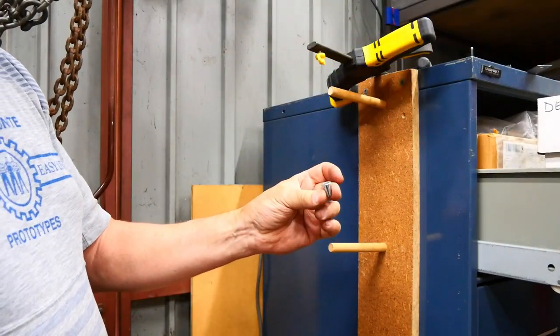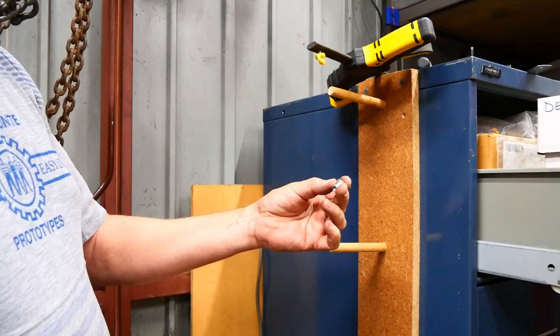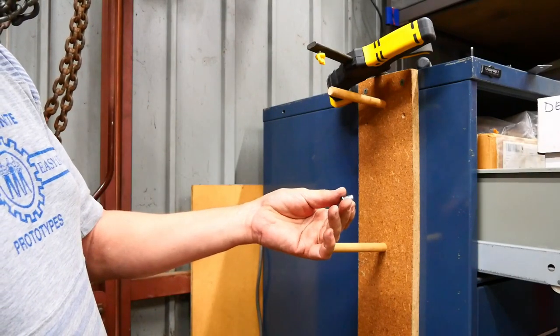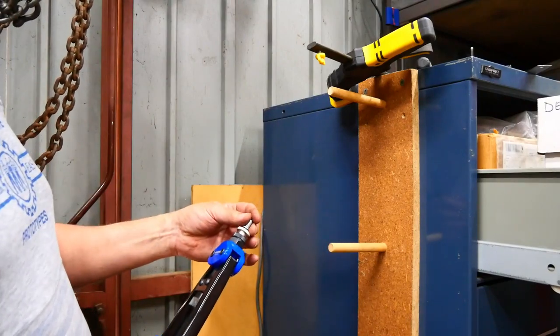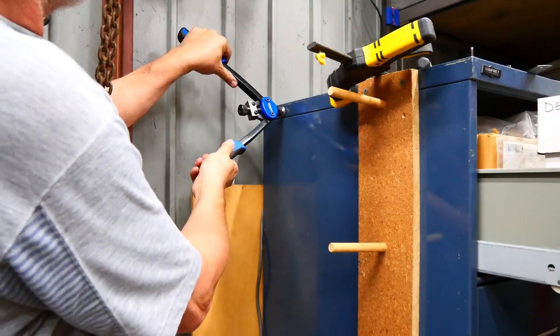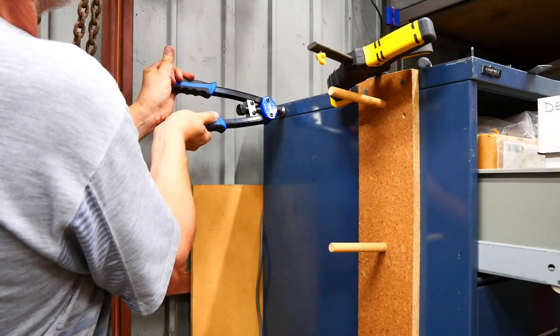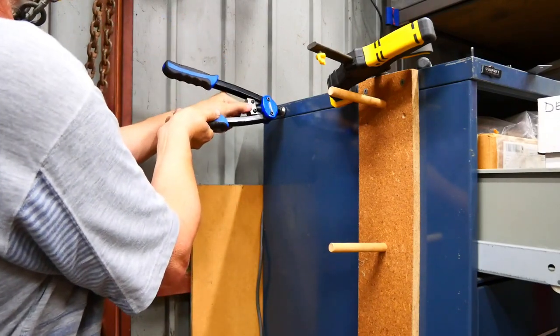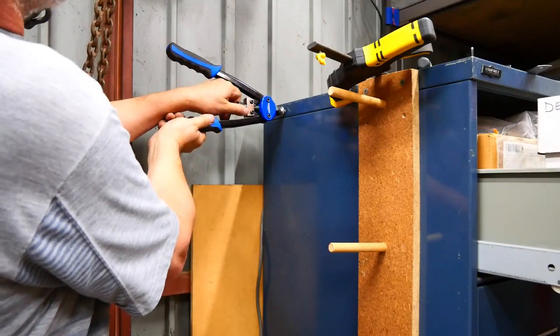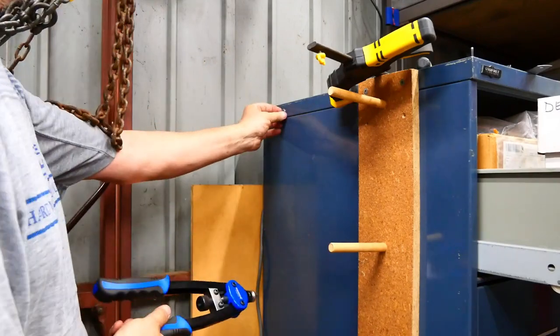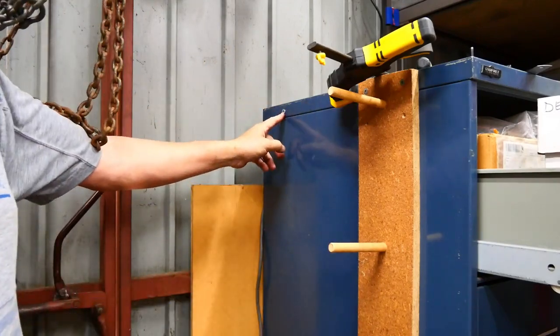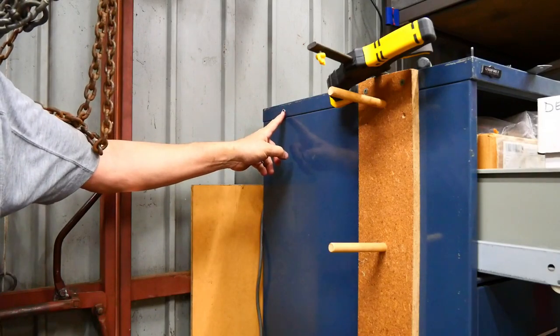So that's a rib nut. You put it in like a pop rivet and it expands and gives you a threaded boss in the hole. So now I've got an M6 thread in a piece of sheet metal.